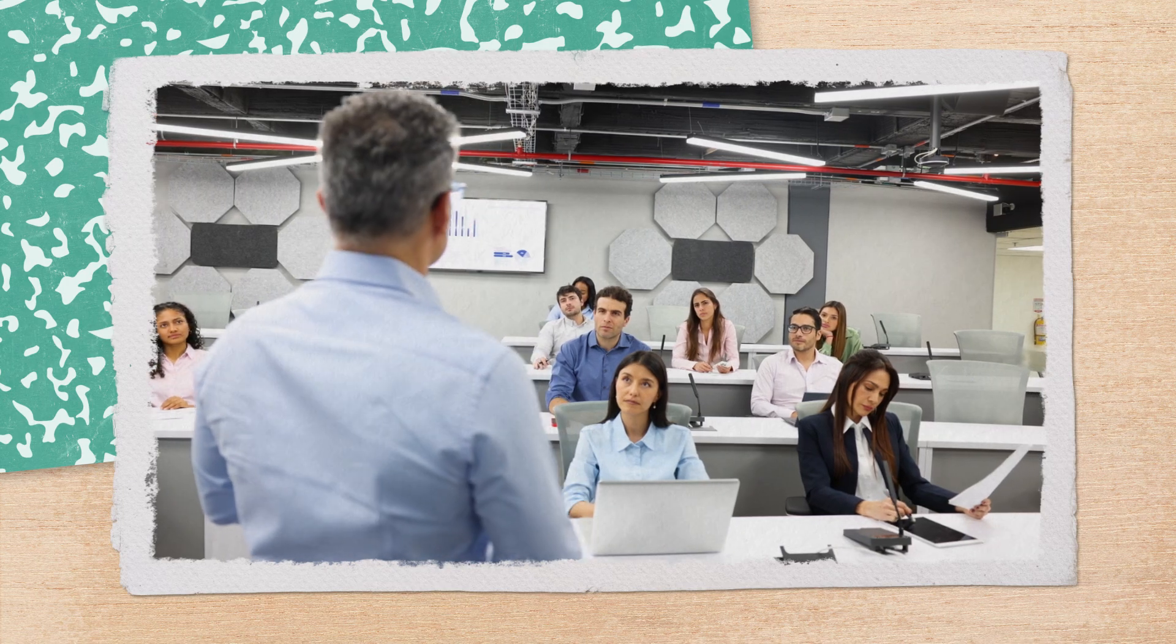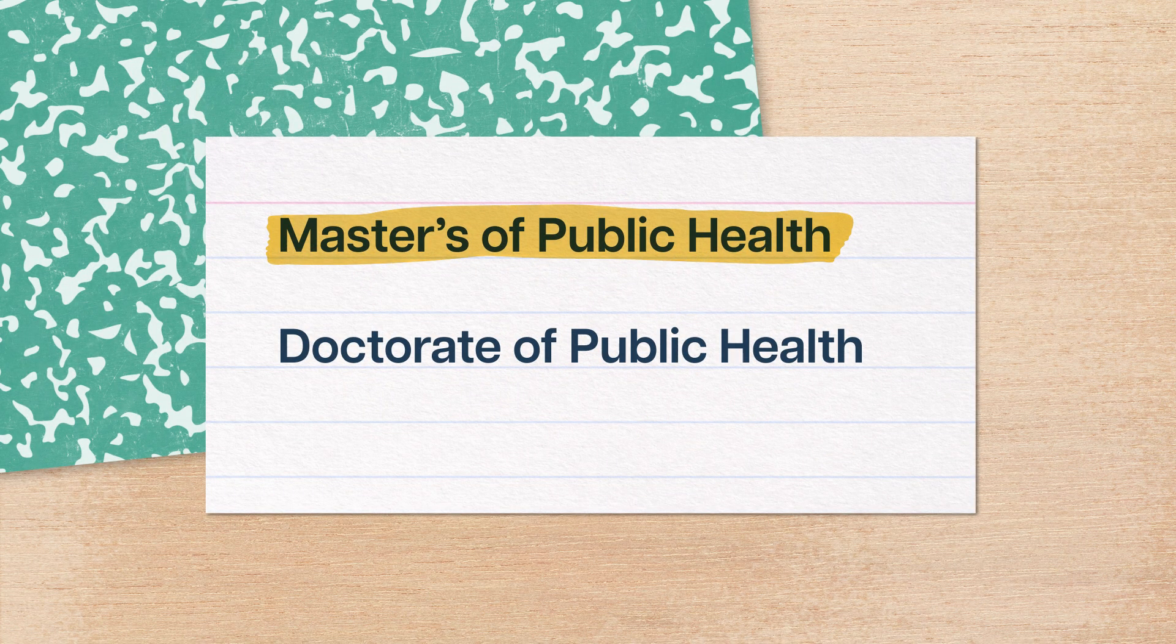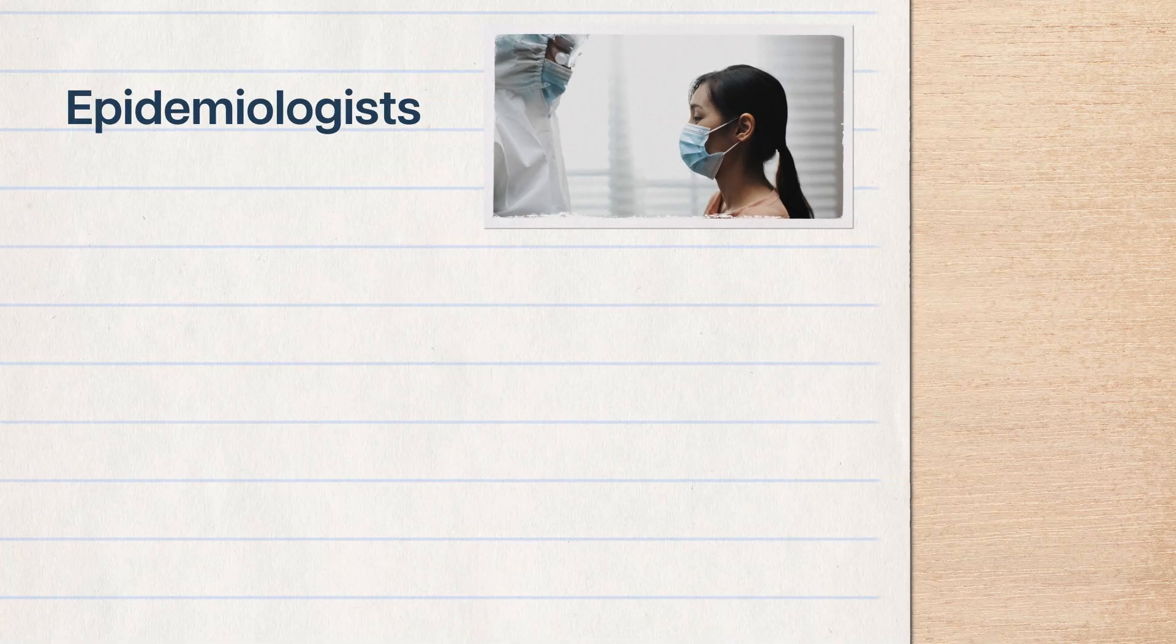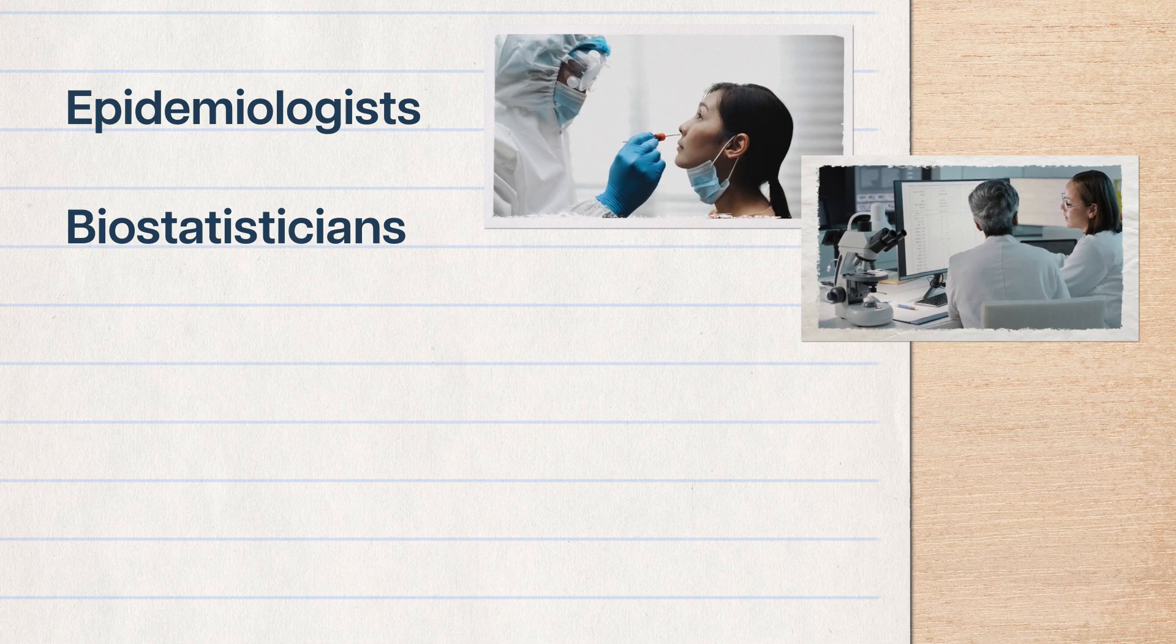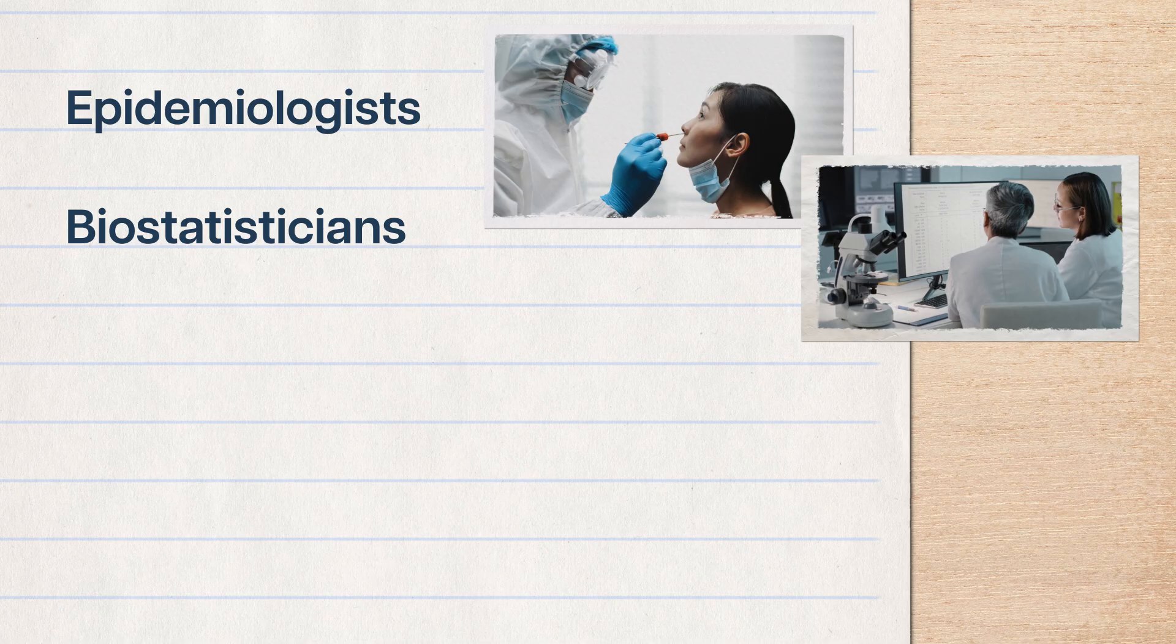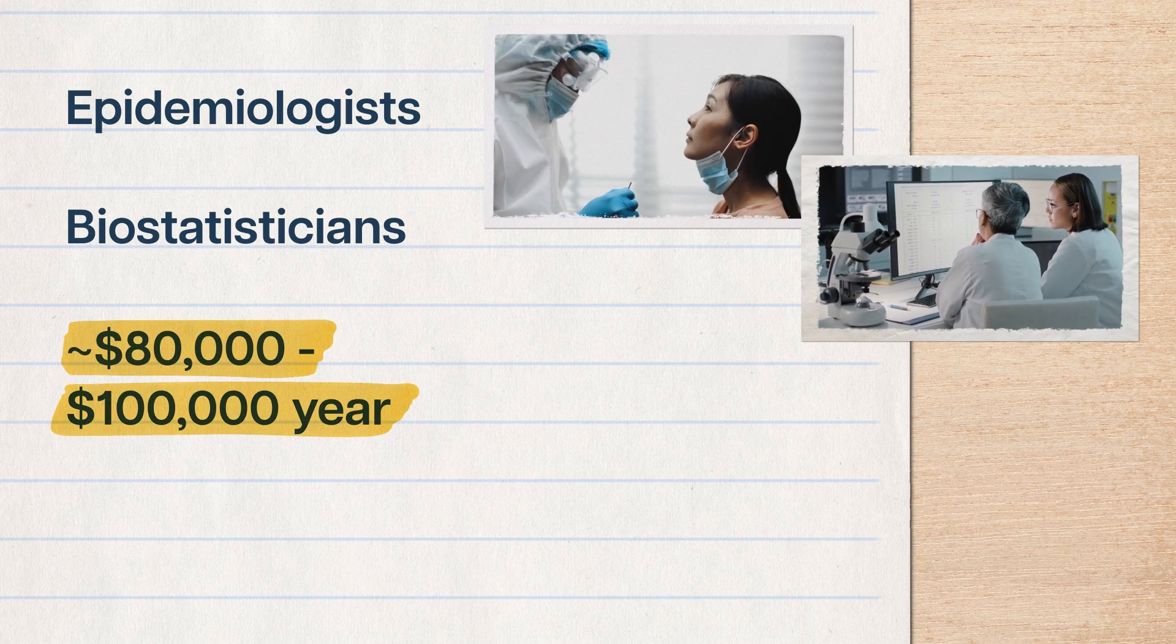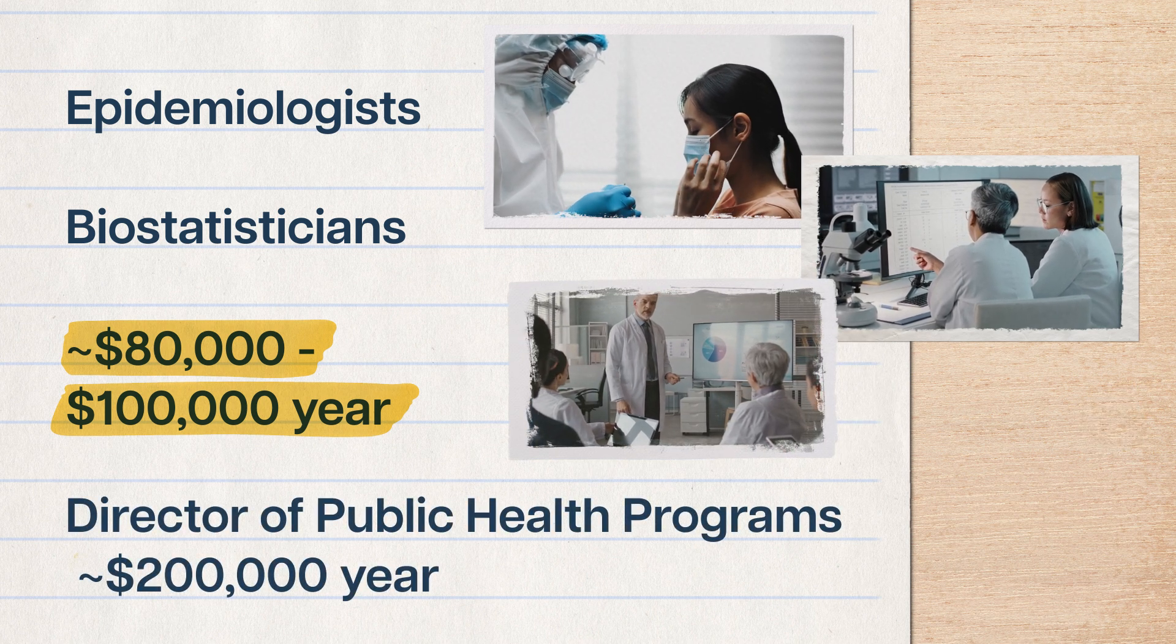A public health major is also a great path to grad school, where a higher-level degree can open up even more career options. Two obvious choices are the masters of public health, or even a doctorate of public health, which unlock some higher levels of those public health careers. With a higher degree, you could become an epidemiologist who investigates causes of disease and injury on a larger scale, a biostatistician who makes sense of data from medical experiments, or take on leadership and advisory positions in public health organizations. Epidemiologists and biostatisticians make anywhere from $80,000 to over $100,000. And directors of public health programs can make as much or more, maybe even $200,000.